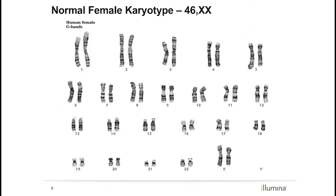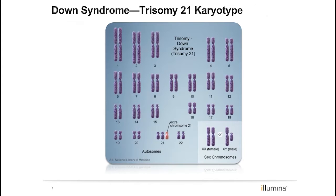Here is a normal female karyotype. You can see that the chromosomes are aligned by pair, arranged by size and position of centromere, with the sex chromosomes being shown last, following the pairs of autosomes.